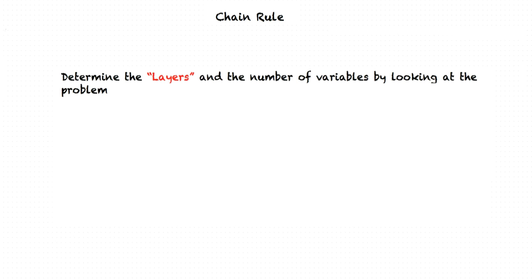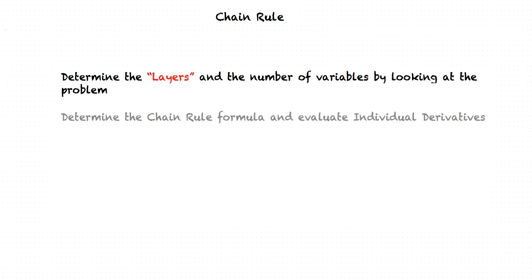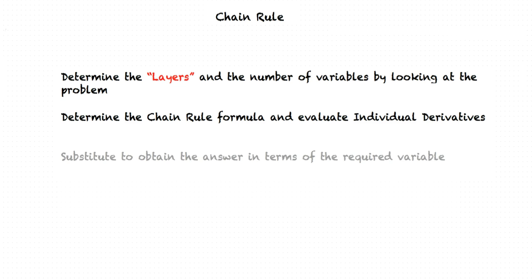I understand the concept now. In order to evaluate a derivative using the chain rule, we first determine the layers and hence the number of variables by looking at the function. Next, we determine the chain rule formula and evaluate the individual derivatives. Finally, we substitute for the variables to ensure the final answer is in terms of the variable present in the problem. Perfect!